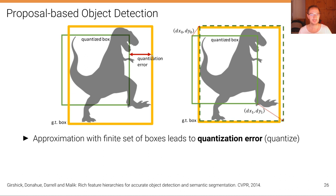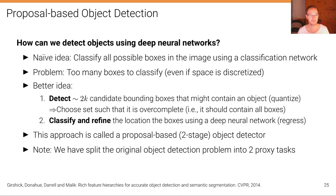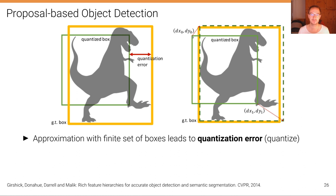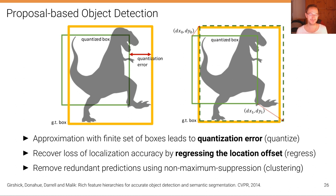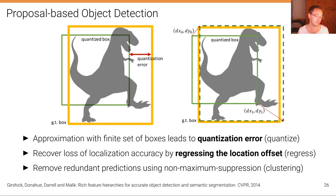We have this quantization error with respect to the true box. What we want to do in the second stage is refine the location of the boxes — to predict the delta from the green proposal box to the final prediction in dashed green — in order to recover localization accuracy by regressing the location offset. We also remove redundant predictions using non-maximum suppression, because multiple proposal boxes may regress to the same object and we want to keep only the most confident single prediction per ground truth.